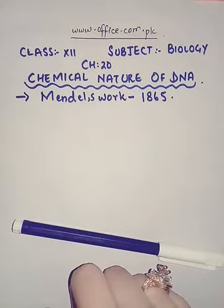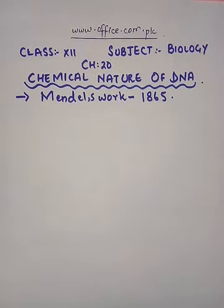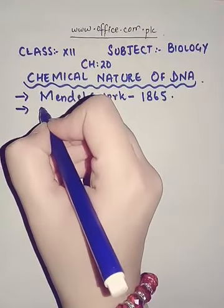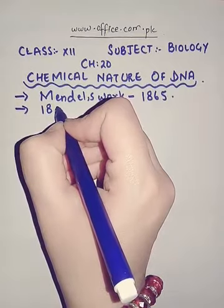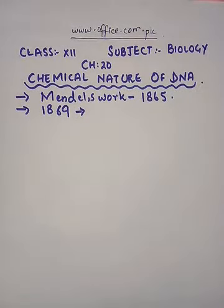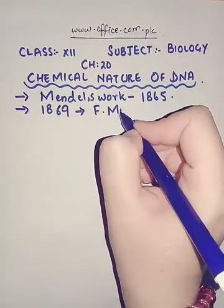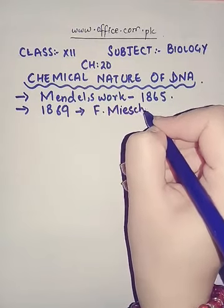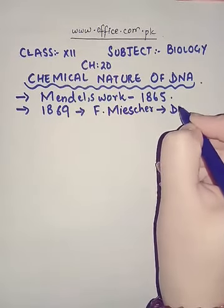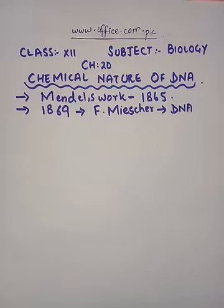Four years after the discovery of Mendel's work, in 1869, another scientist — German in origin — named Frederick Miescher discovered DNA. So DNA was discovered long before it was actually studied in detail. He was extracting some material from the nuclei of human cells and fish sperm.